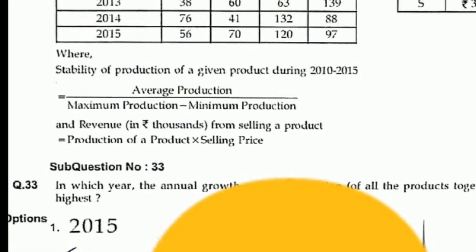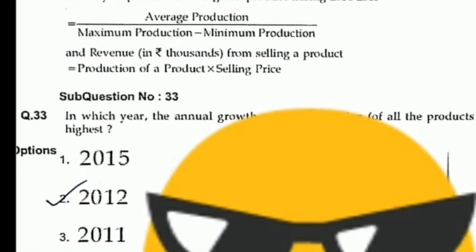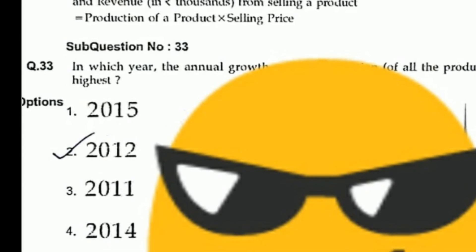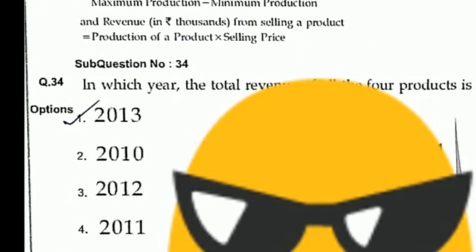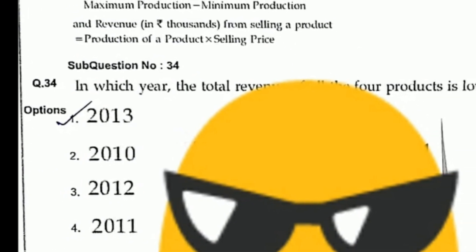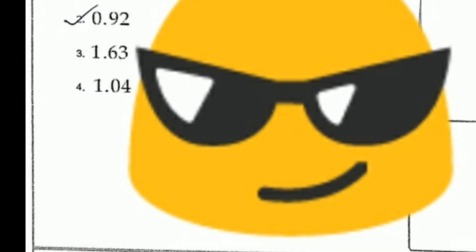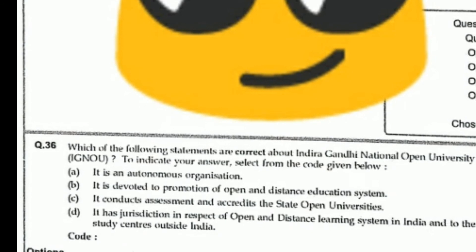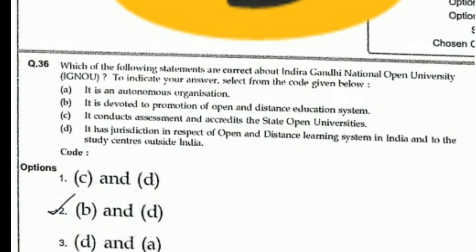Question 33 on annual growth: the right answer is 2012. Question 34: in which year was the total revenue — the right answer is 2013. Question 35 on stability: the right answer is 0.92. Question 36 on IGNU: the right answer is option 2.